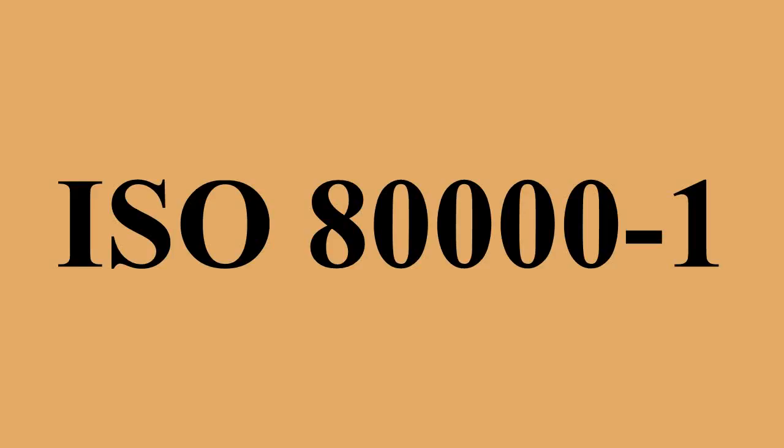A nominal property is a property of a phenomenon, body, or substance where the property has no magnitude. Regarding quantities, the International System of Quantities: the special choice of base quantities and quantity equations, including multiples, given in ISO 80000 and IEC 80000 defines the ISQ — denoted ISQ in all languages. Derived quantities can be defined in terms of the base quantities by quantity equations.